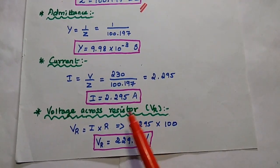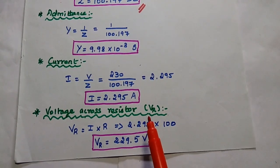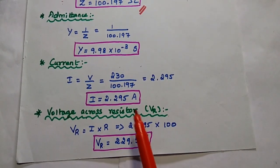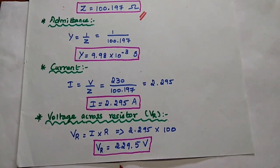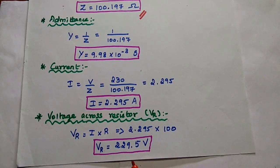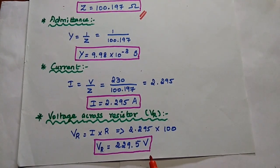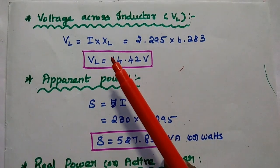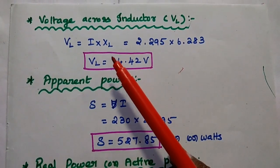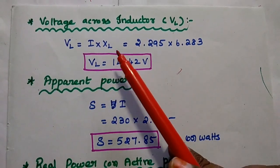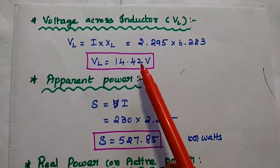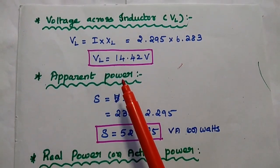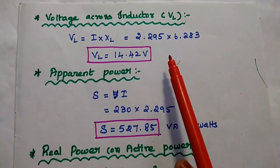After getting this current value, we are going to find out the voltage across the resistor. Using Ohm's law: VR is equal to I into R, that is 2.295 multiplied with 100, giving the voltage across the resistor as 229.5 volt. Next, the voltage across the inductor: VL is equal to I into XL. Substituting I as 2.295 and XL as 6.283, we get the voltage across the inductor as 14.42 volt.